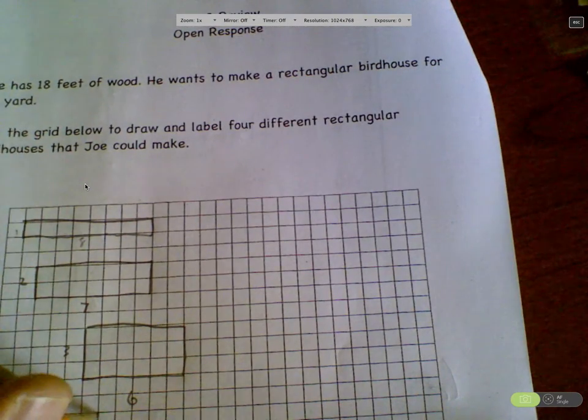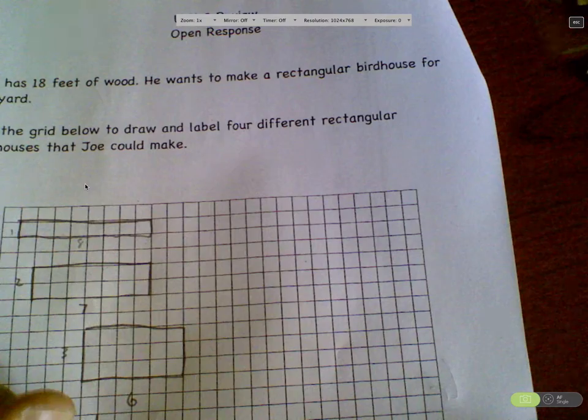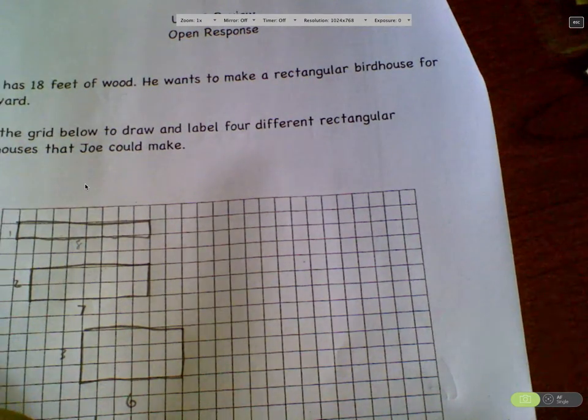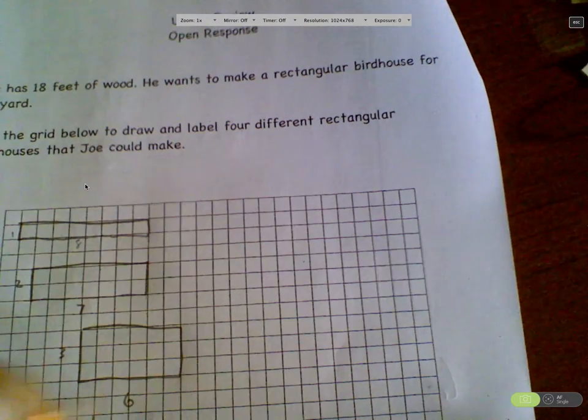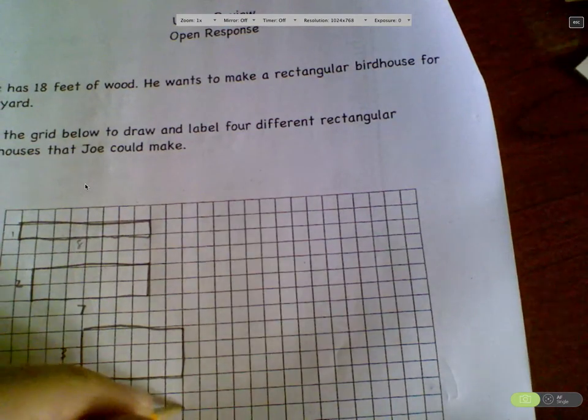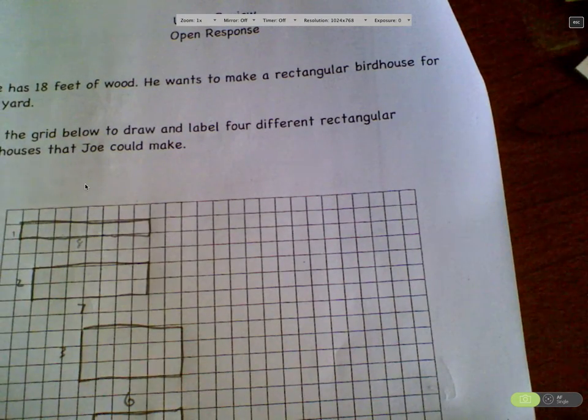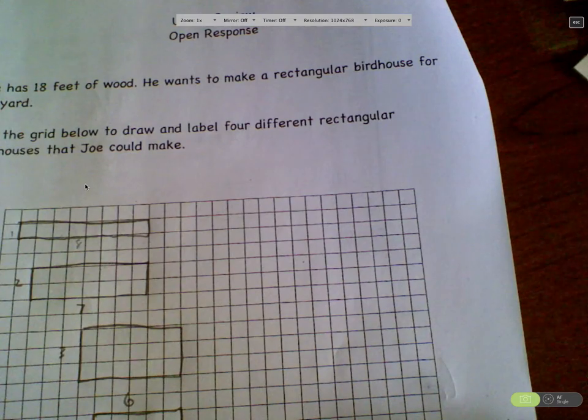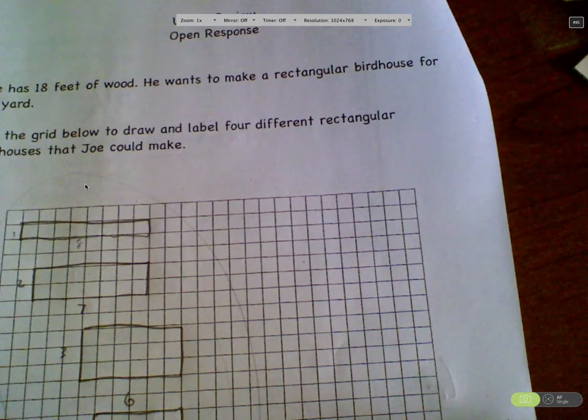Three by six. Is that a perimeter of eighteen? Yes. Now I'm going to go four by five. This is kind of fun. Is that a perimeter of eighteen? Yes. There they are. Woo! I can't see. Oh, sorry. It's the last one. There you go.